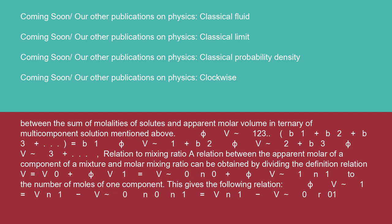Relation to mixing ratio: a relation between the apparent molar volume of a component of a mixture and the molar mixing ratio can be obtained by dividing the definition relation V = V₀N₀ + φV₁N₁ by the number of moles of one component. This gives: φV₁ = V/N₁ - V⁰(N₀/N₁) = V/N₁ - V⁰·r₀₁.